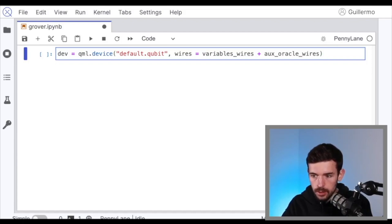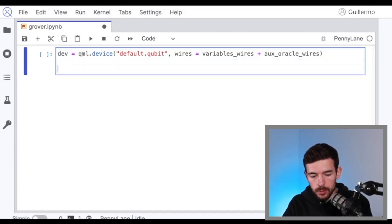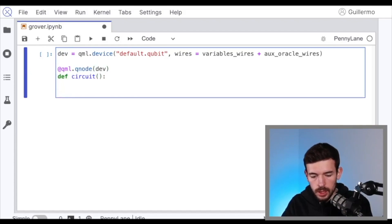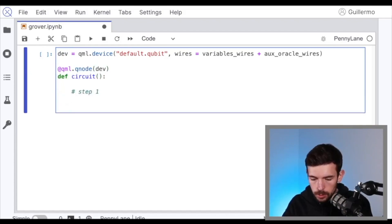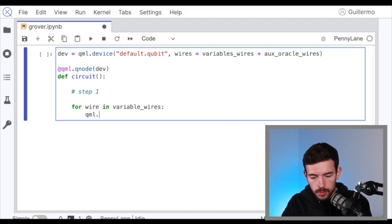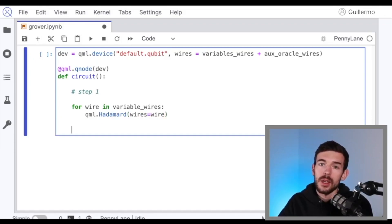So after that, let's create our circuit. And let's go step by step. First of all, we have to create the equal superposition of all the possible configurations. So what we have to do, let's say for wire in variable wires, let's apply a Hadamard. We only want the superposition in the variable qubits, because they are the ones that we want to try all the possible configurations.